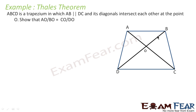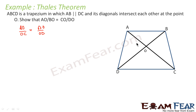AO by BO — we don't know how to handle that directly. Let me rewrite this. I can rewrite the required equation as AO by OC equals BO by OD. I know AO by OC is something I can work with. Because to prove things using the theorem, I need a parallel line. Without a parallel line, we can't prove anything. So let's draw a parallel line.